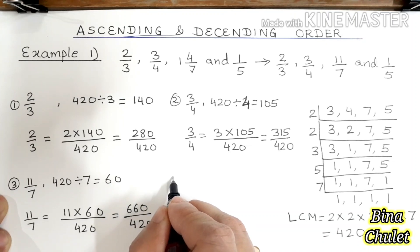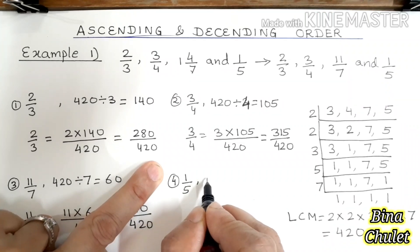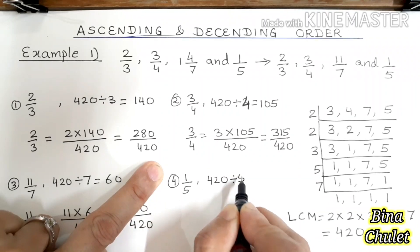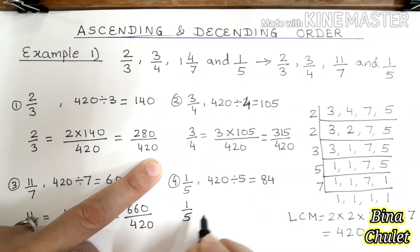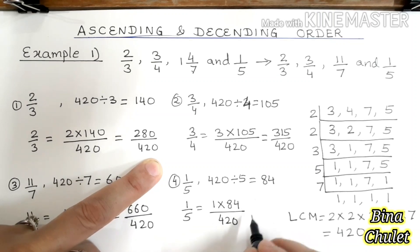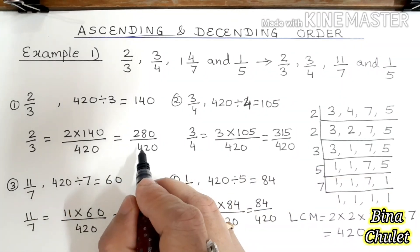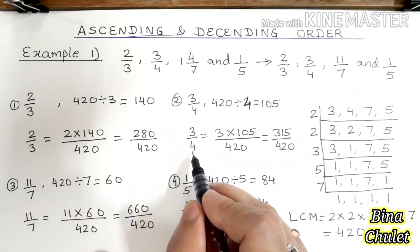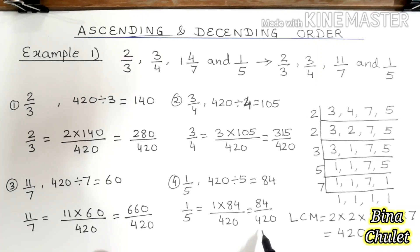The fourth fraction is 1 upon 5. When we divide 420 by 5, what we get is 84. So 1 upon 5 will become 1 × 84 upon 420, which is 84 upon 420. Now you can see all these are like fractions: 280 upon 420 in place of 2 upon 3, 315 upon 420 in place of 3 upon 4, 660 upon 420 in place of 11 upon 7, and 84 upon 420 in place of 1 upon 5.